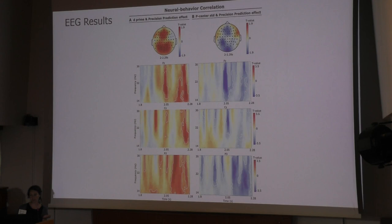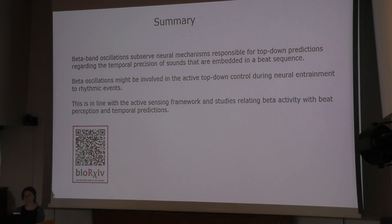Here you see beta power in the last entrainment interval. It correlated negatively with the P-center variability. We also measured the P-center variability to all the sounds. This shows this tight relation between beta oscillations and perceptual temporal precision, as we think.